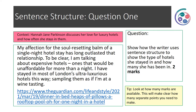Question one. Context: Hannah Jane Parkinson discusses her love for luxury hotels and how often she stays in them. 'My affection for the sole resetting balm of a single night hotel stay has long outlasted that relationship. To be clear, I'm talking about expensive hotels — ones that would be unaffordable for more than a night. I have stayed in most of London's ultra-luxurious hotels, sampling them as if I'm at a wine tasting.' The question is: show how the writer uses sentence structure to show the type of hotels she's stayed in and how many she's been in. This is worth two marks, so you need to make two separate points.